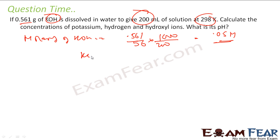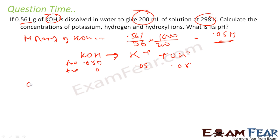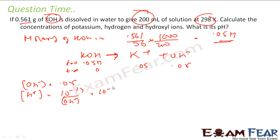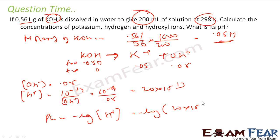So 0.05M KOH dissociates completely into K⁺ and OH⁻, since KOH is a strong base. Therefore [OH⁻] = 0.05M. Using Kw: [H⁺] = 10⁻¹⁴ / [OH⁻] = 10⁻¹⁴ / 0.05 = 2×10⁻¹³ M. Finally, pH = −log[H⁺] = −log(2×10⁻¹³) = 12.7. That's the answer.